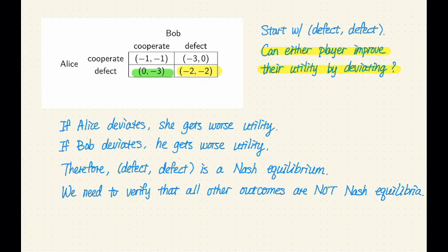Because although Alice is defecting, she is choosing her dominant strategy, Bob can do better, right? If Bob chooses to defect rather than cooperate, then he gets a utility of minus 2 instead of minus 3. So Bob wants to deviate. Therefore, this is not a Nash equilibrium.